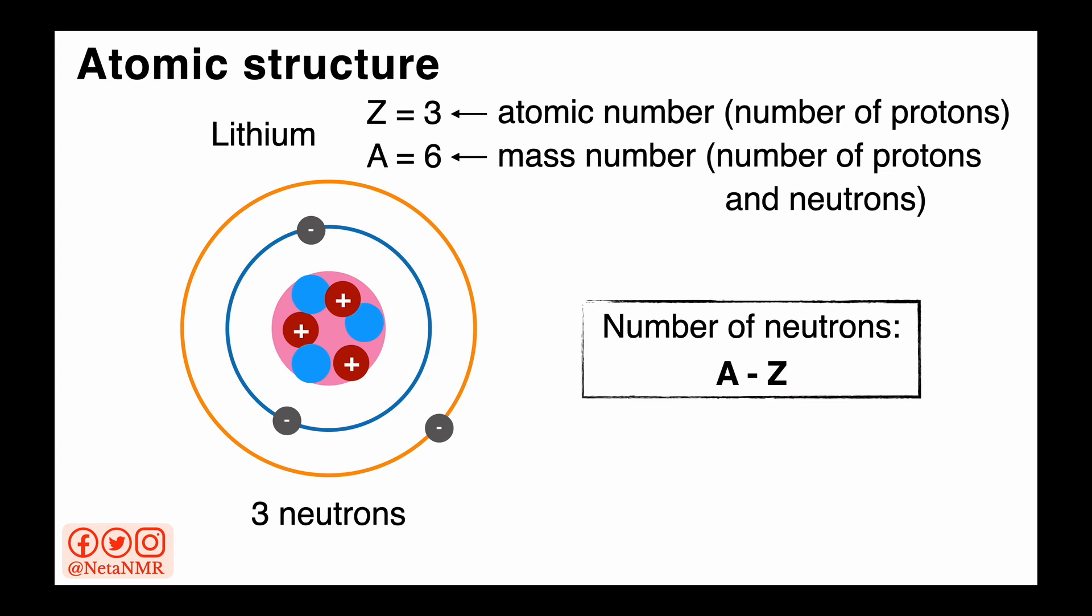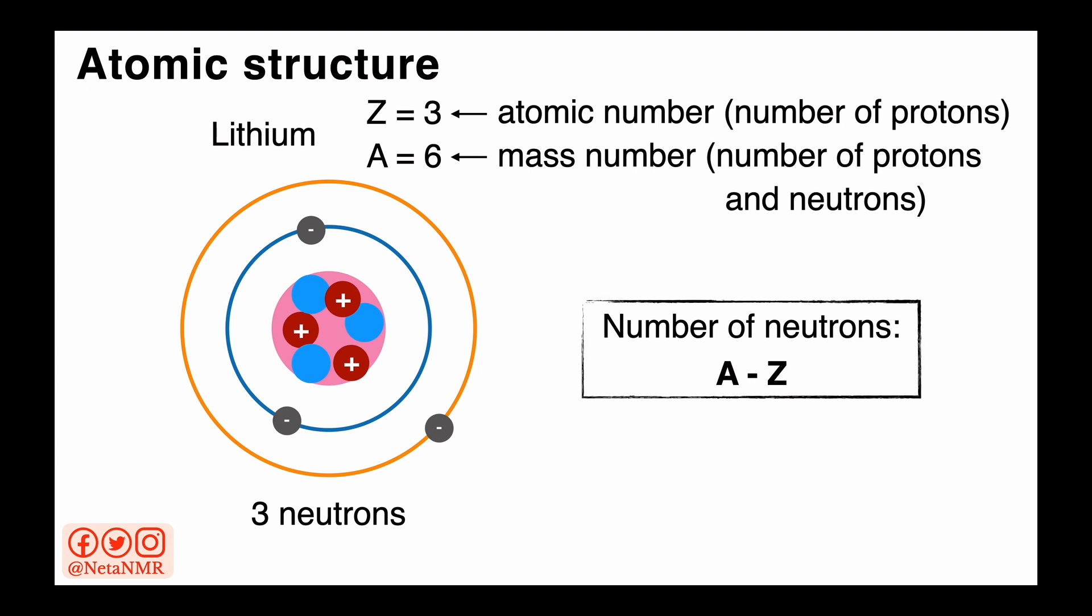So lithium has 3 neutrons in the nucleus. But lithium can also have 4 neutrons in the nucleus. And this form of lithium still has Z equals 3, so it still has 3 protons, but now A is 7 and that's what gives us 4 neutrons in the nucleus.